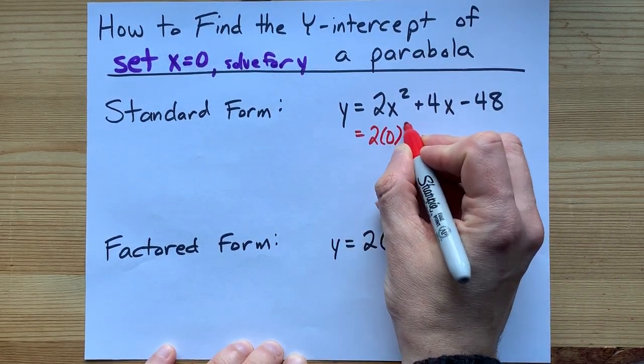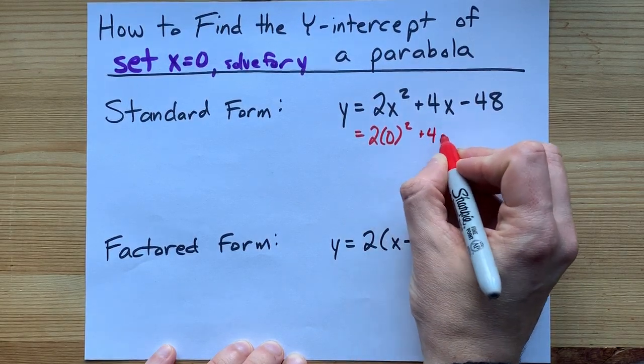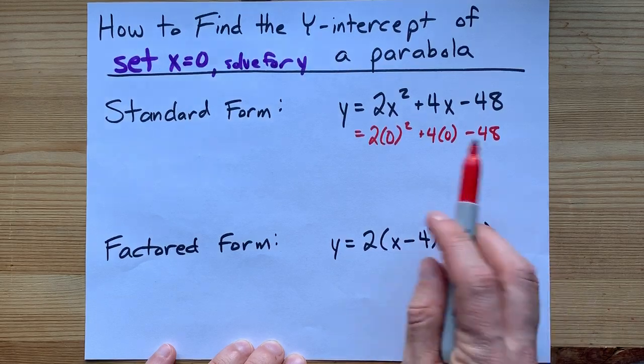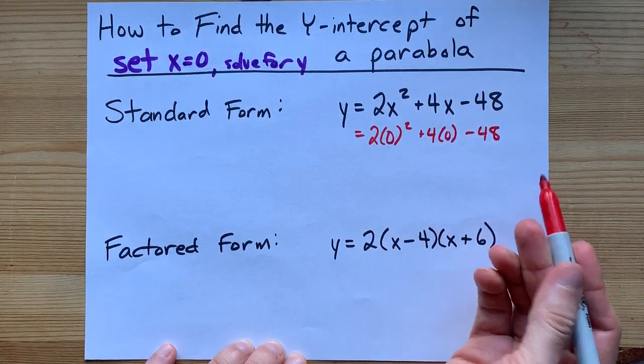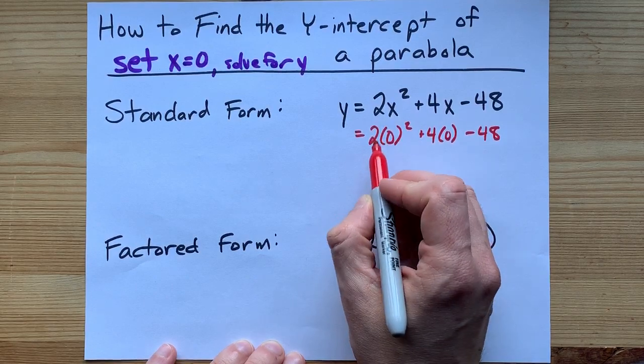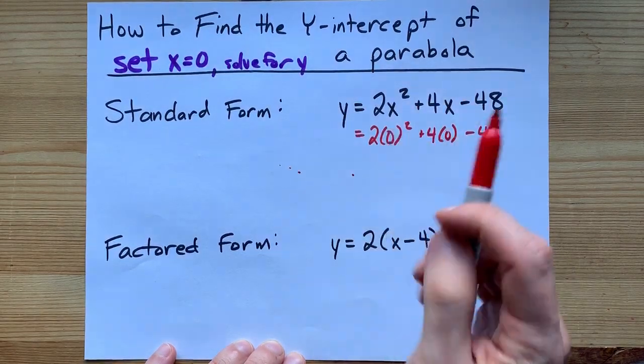2 times 0 squared plus 4 times 0 minus 48. Now you can do that all on your calculator at once, or you could do it piece by piece. 0 squared is 0, times 2 is also 0.